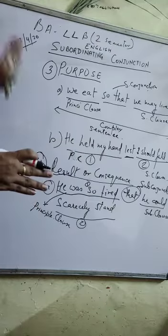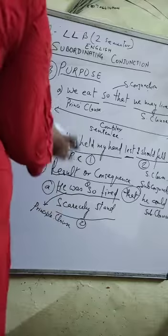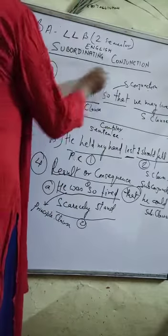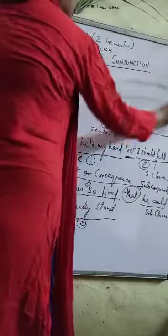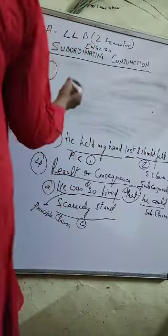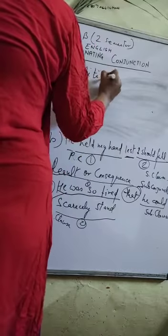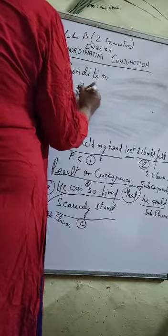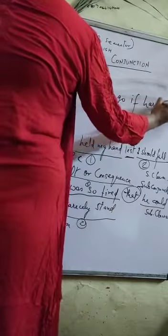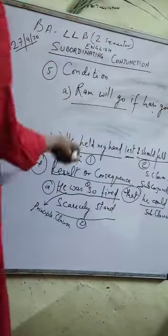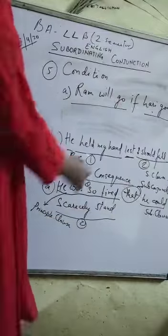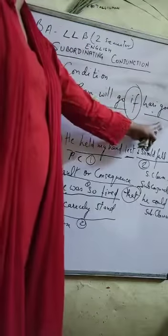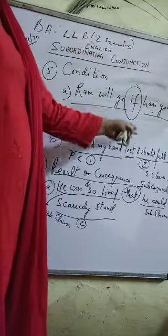अभी इसके बाद हम condition के ऊपर भी subordinating conjunction को identify कर सकते हैं. Fifth category is condition. Condition के ऊपर हम कैसे subordinating conjunction को define करेंगे? Example: 'Ram will go if Hari goes.' 'Ram will go' is one sentence, everybody knows, and 'Hari goes' is another sentence. As I told before, any sentence joined with a subordinating conjunction becomes the subordinating clause.